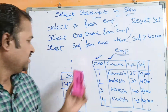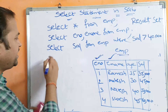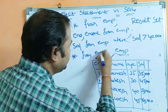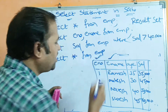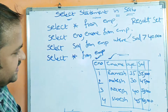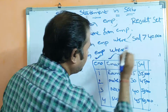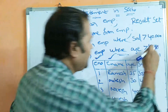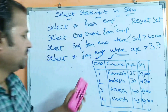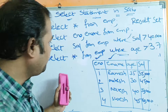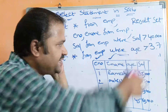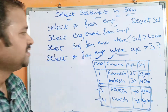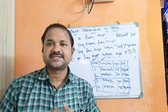We can display row data as well. For example: SELECT * FROM EMP WHERE age > 37. SELECT * means all columns will be included, but the WHERE condition filters the rows. With age greater than 37, there are two rows in the table where the age is greater than 37, so those two rows will get displayed. This is about the SELECT command in SQL.